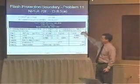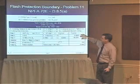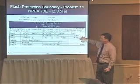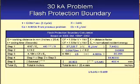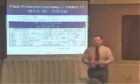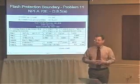Now we multiply all three steps together: 7,443 times 0.0835 times 30.254, and we get a final answer of 18,803. We take that number and raise it to one over X — that's 1 divided by 1.641 — or raise 18,803 to the 0.609 power. That gives us 402 millimeters. Divide by 25.4 and that's 15.8, rounded up to 16 inches for the flash protection boundary, which makes sense because we calculated slightly less than the second degree burn threshold.